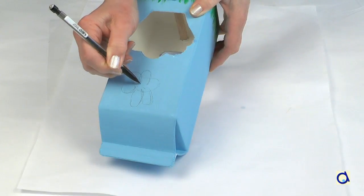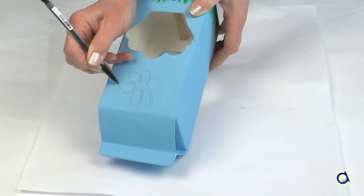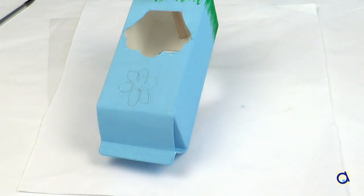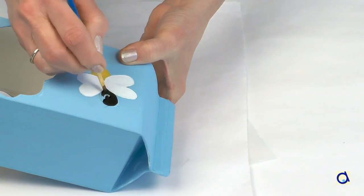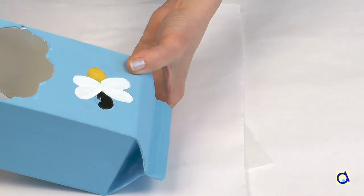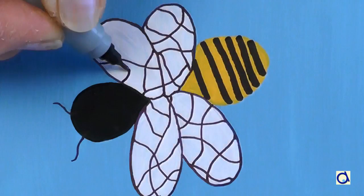Next I decided to decorate each side of the box with different pictures. On one side, I painted a bee. I painted the head black, the body yellow and the wings white. I drew the lines on the body, the veins of the wings and the antennae with the black felt tip pen.